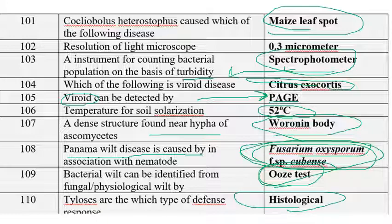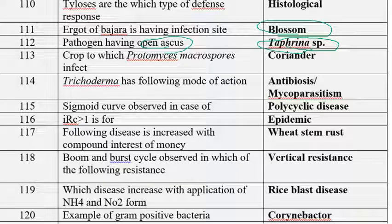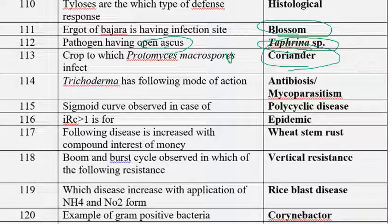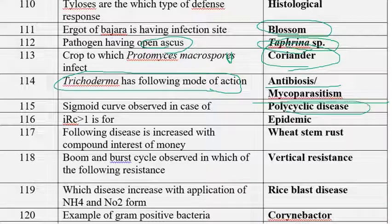Tylosis is a histological defense response. Ergot of bajra has the infection type blossom infection. The pathogen having open ascus is Taphrina, which has naked asci called open ascus. Coriander stem gall is caused by Protomyces macrosporus. Trichoderma has the following mode of action as a biocontrol agent: antibiosis and mycoparasitism.